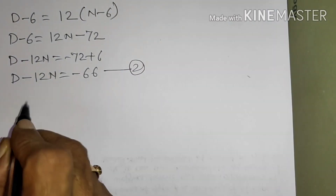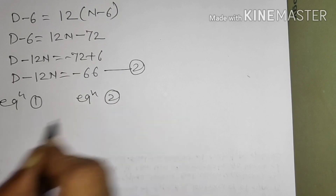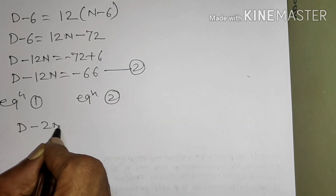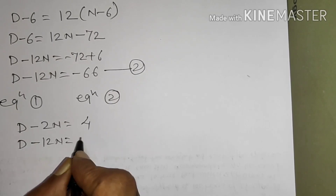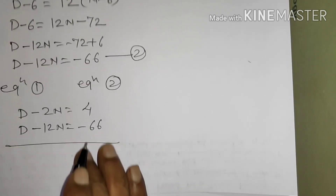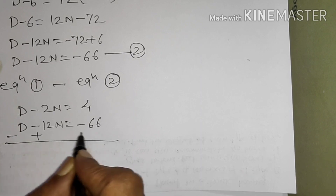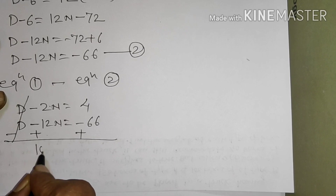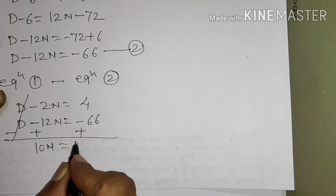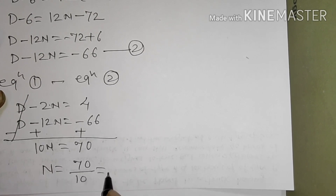Now, equation 1: D minus 2N equals 4. Equation 2: D minus 12N equals minus 66. The signs of D in both are the same, so we do subtraction — signs will be changed. D cancels. Plus 12N minus 2N gives 10N, equal to 66 plus 4, which is 70. Therefore N equals 70 divided by 10, that is 7.